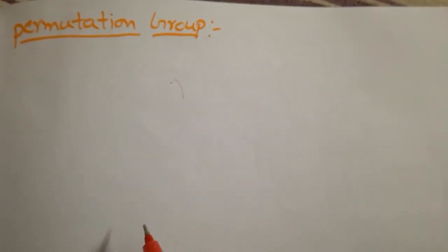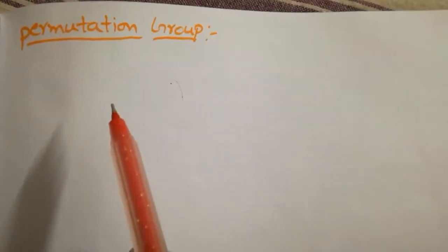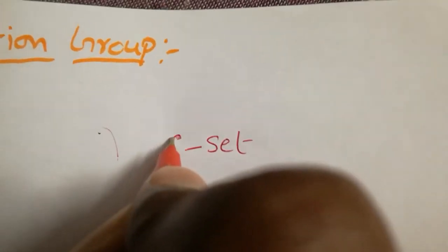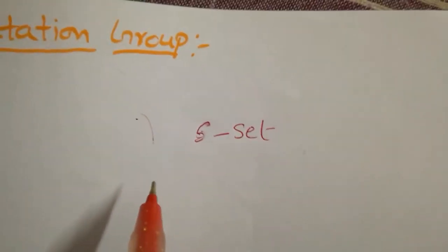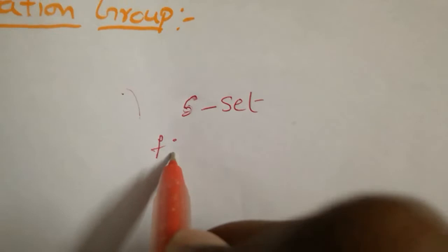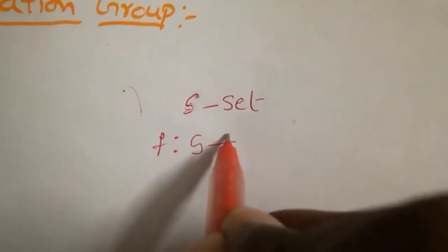In this video we are going to learn about permutation groups. So what is a permutation group? Let S be a non-empty set. Then the permutation of S is a function which maps from S to S.